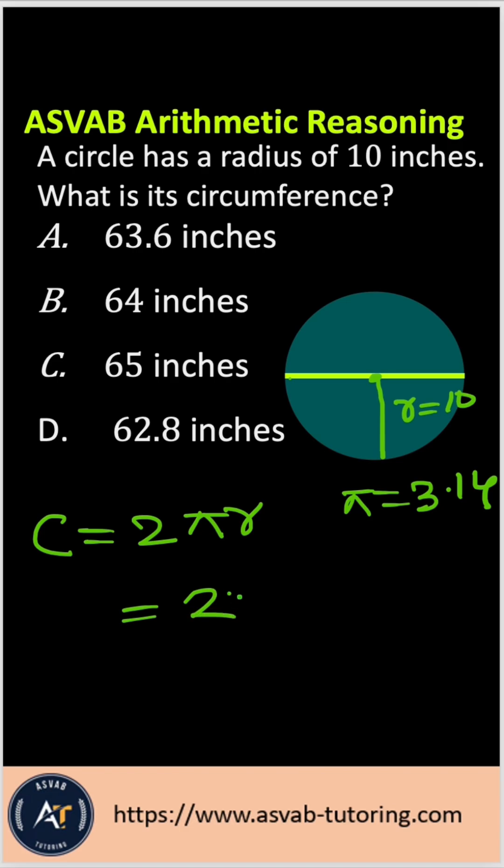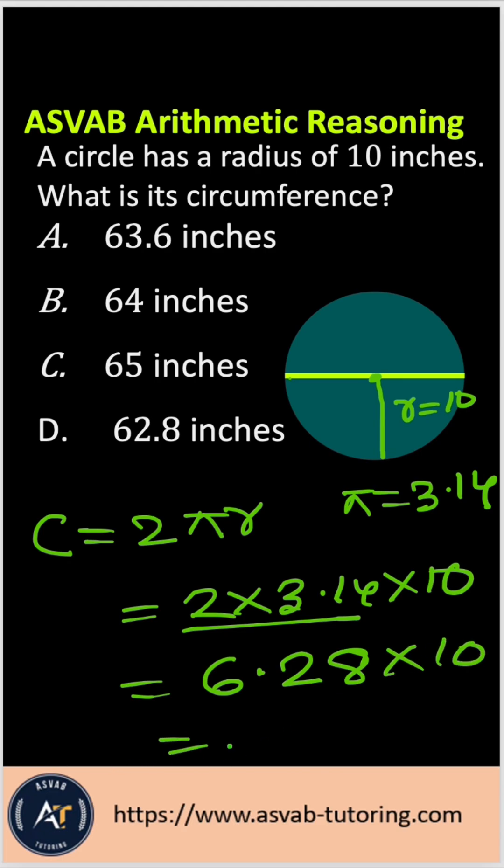2 times 3.14 times 10. So 2 times 3.14 gives you 6.28 times 10. So that gives you 62.8.